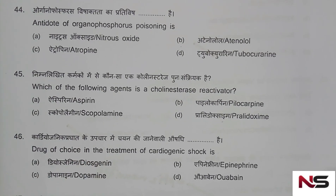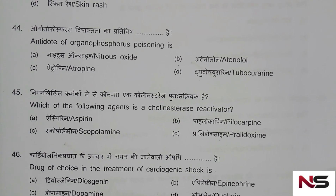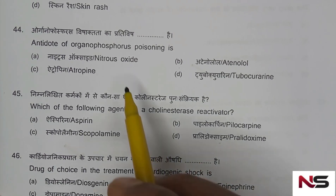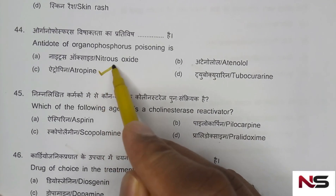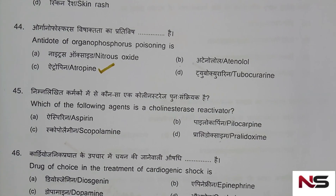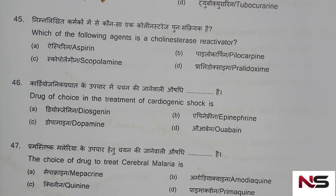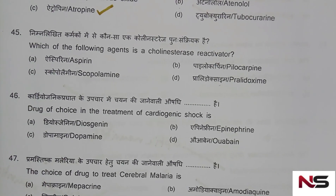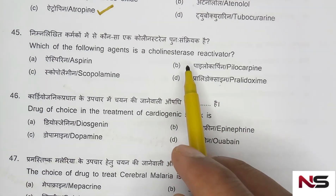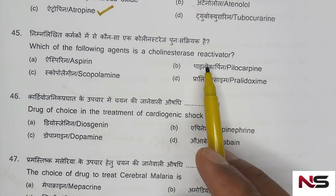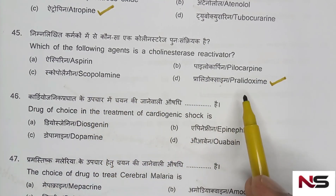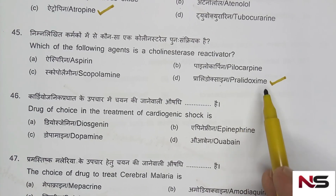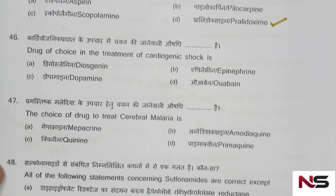Question 44: Antidote of organophosphorus poisoning. Options are: nitrous oxide, atenolol, atropine, tubocurarine. The correct answer is option C — atropine. Question 45: Which agent is a cholinesterase reactivator? Options are: pralidoxime, aspirin, pilocarpine, scopolamine. The correct answer is pralidoxime.